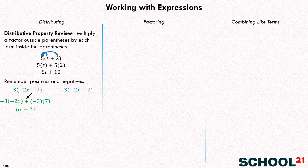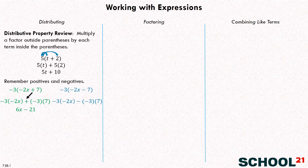So tell me what I should write. Negative three times negative two X is six X. And negative three times negative seven is plus 21. Once you get good at the distributive property, you can just write this as six X plus 21. Going more slowly: negative three times negative two X, and then minus a negative three times seven. You could also say plus a negative three times negative seven — just as long as you're paying attention to all the positives and negatives correctly.